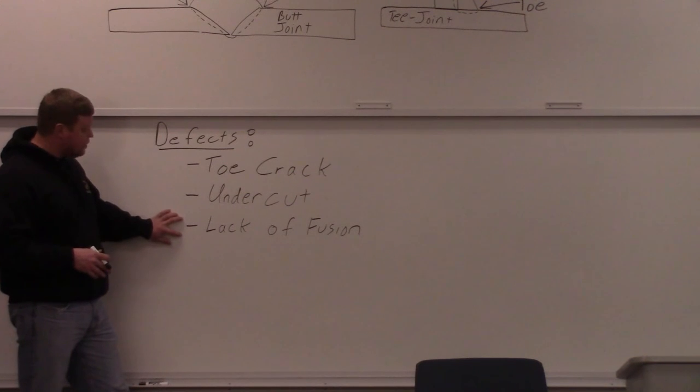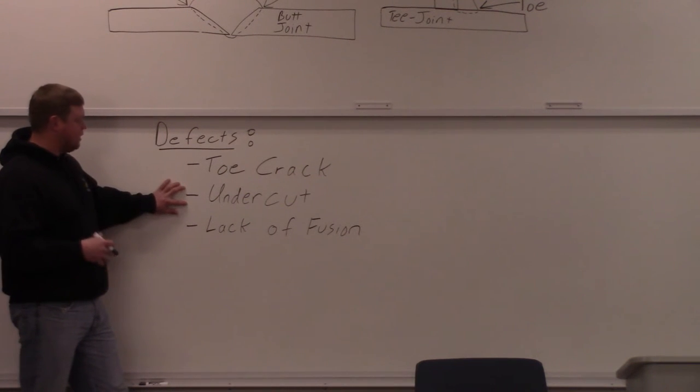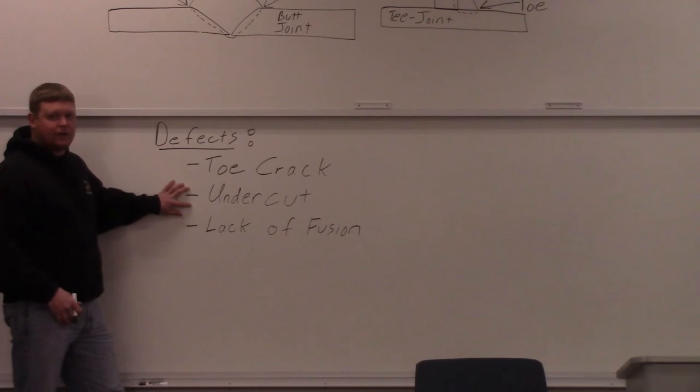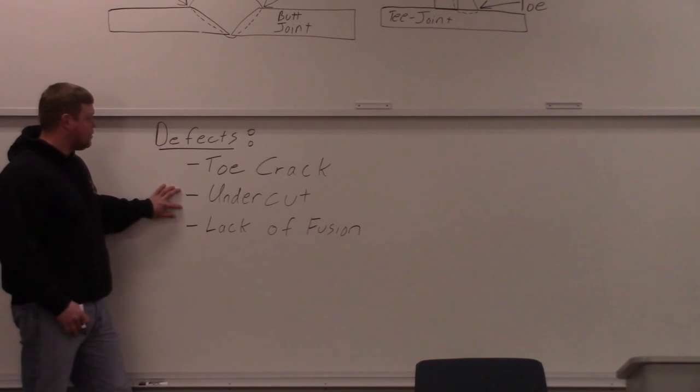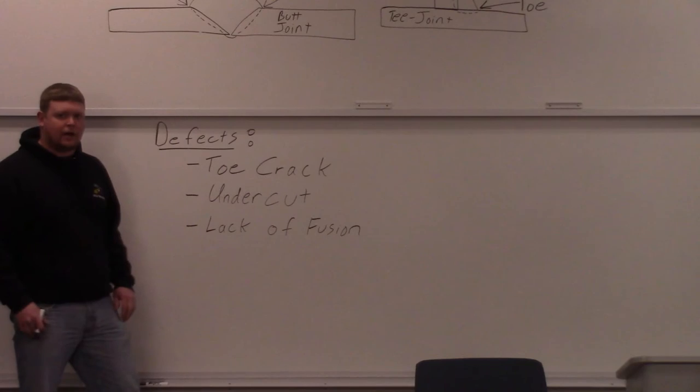So these three defects are pretty significant defects. Toe crack and lack of fusion are probably the most dangerous. Undercut sometimes can cause problems, but it can take a long time for the undercut to cause problems. But if you're passing a code quality weld, you're allowed one thirty-second undercut only. So what we'll do now is we'll take a look at some pictures of a toe crack, undercut, and lack of fusion and see what they look like.